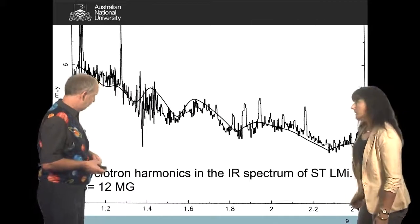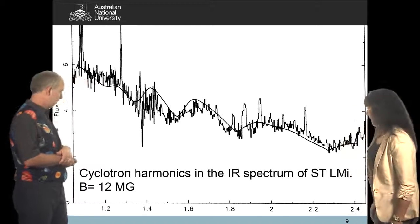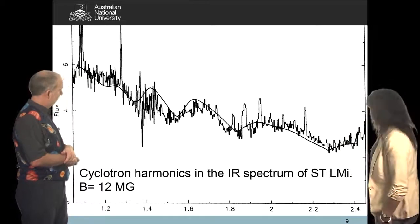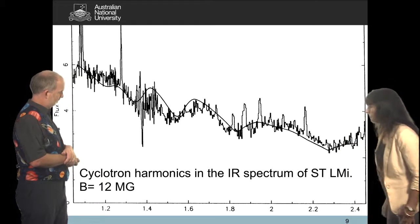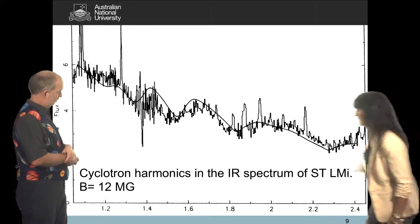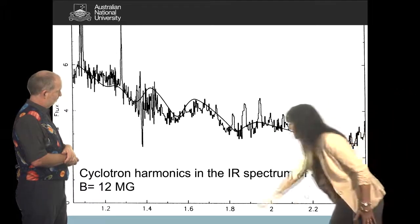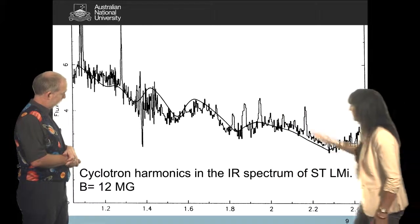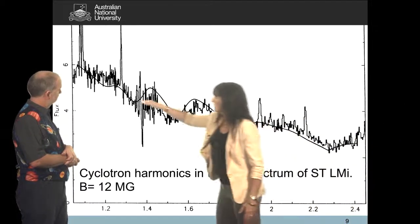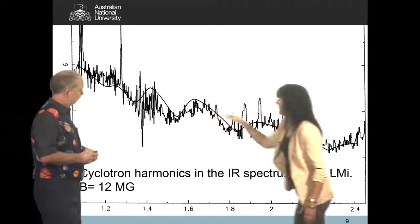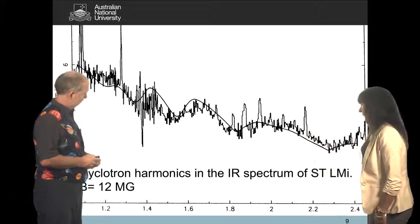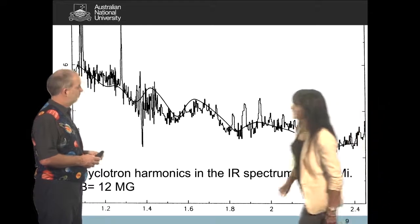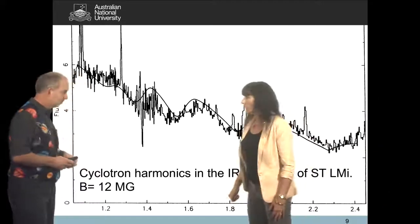Yeah, I've got an infrared spectrum here, showing the same thing. And this is the infrared spectrum of another AM Her type system, which is called STLMI. And this, as I said, it's in the infrared. So these ones are microns on the x-axis. And again, what we can see is this wiggle. We can see these cyclotron humps. And they can be modeled with a field strength of 12 megagauss.